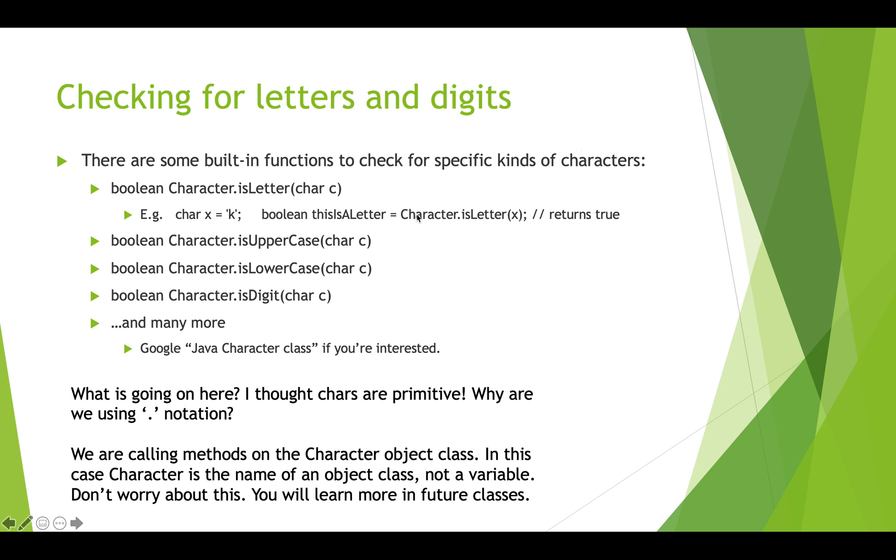This is a static call so we don't need to call this method on an object, we're passing in the object that we want to work on instead. You don't really need to worry about this. If you noticed that we're working with chars which are primitives and we're using this dot notation and that question came to you, congratulations you're following along well and you're asking the right questions. In a later programming class you'll learn more about this type of thing where we're calling a method on an actual class or object name not an object variable.